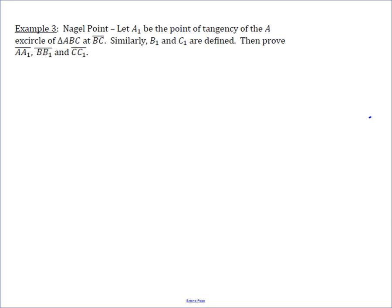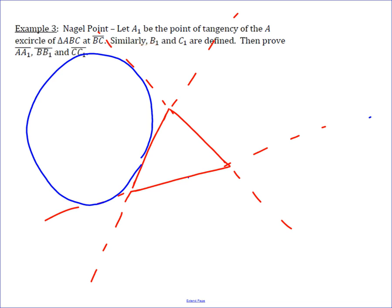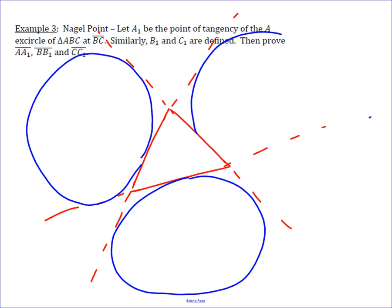In this video, we want to show that using Ceva's theorem, the Nagel point exists. The Nagel point comes about by drawing in a triangle and its excircles. The excircles are found by extending the sides of the triangle and drawing in circles that are tangent to one side of the triangle and the two extended sides. I'm just going to do a very rough sketch of this.